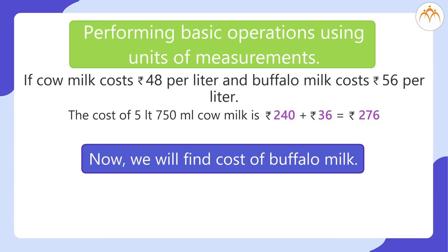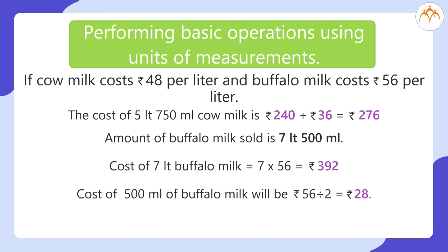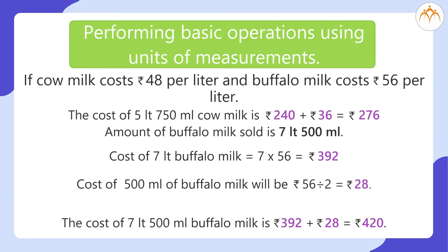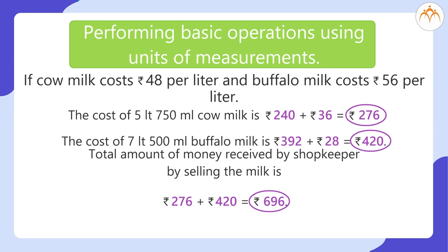Now for buffalo milk: 7 litres 500 millilitres were sold. Cost of 7 litres = 7 × 56 = ₹392. Cost of 500 ml = 56 ÷ 2 = ₹28. Total buffalo milk cost = ₹392 + ₹28 = ₹420. The total amount received by the shopkeeper by selling both milks is ₹276 + ₹420 = ₹696.